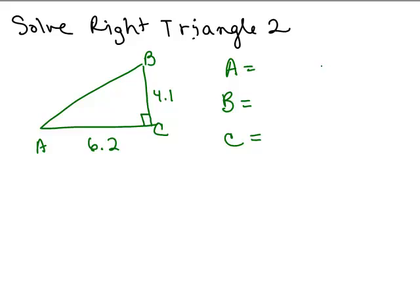And the sides are lowercase a, which is the side opposite angle A, lowercase b, and lowercase c. C is the hypotenuse because it's opposite the right angle.